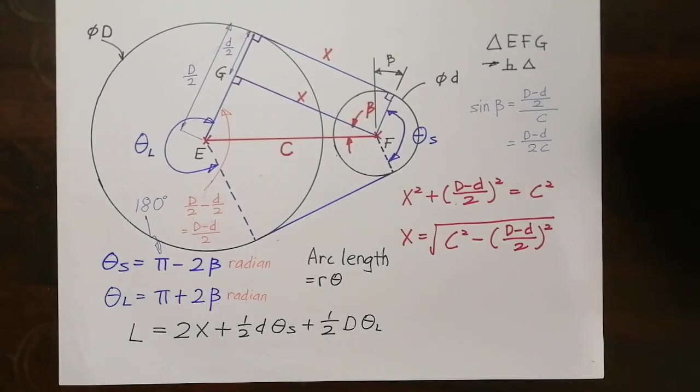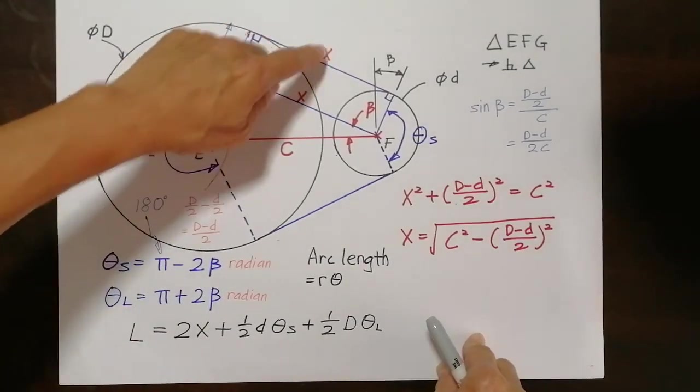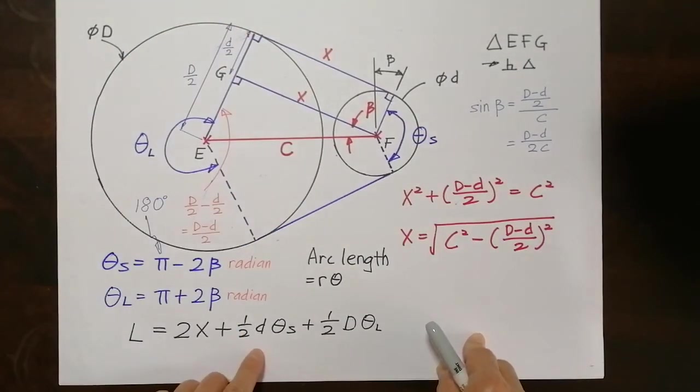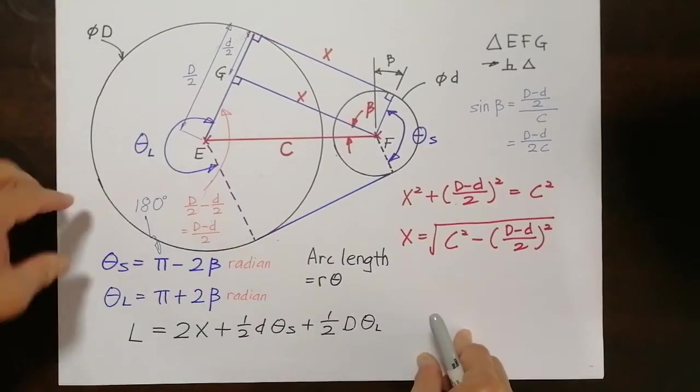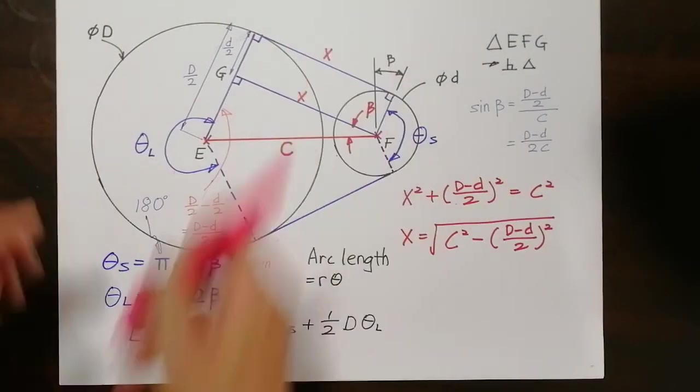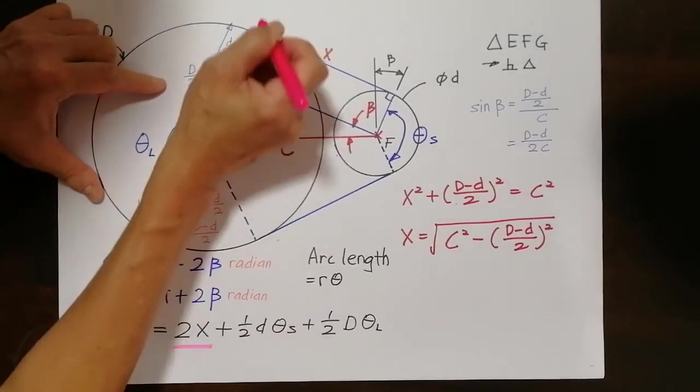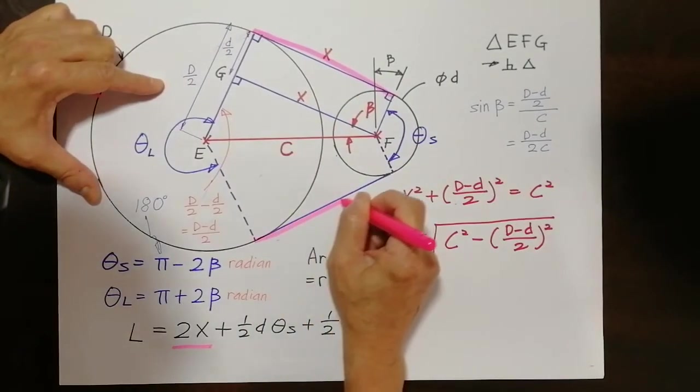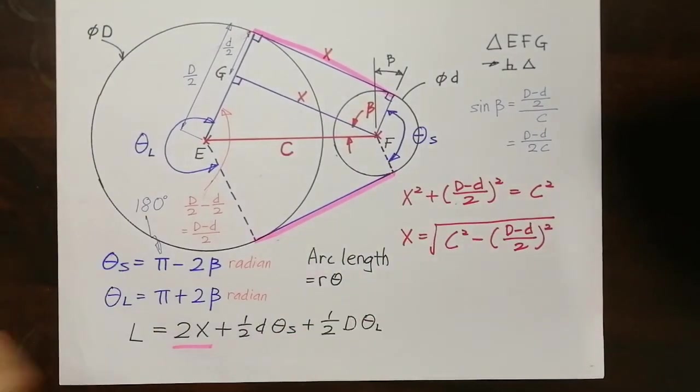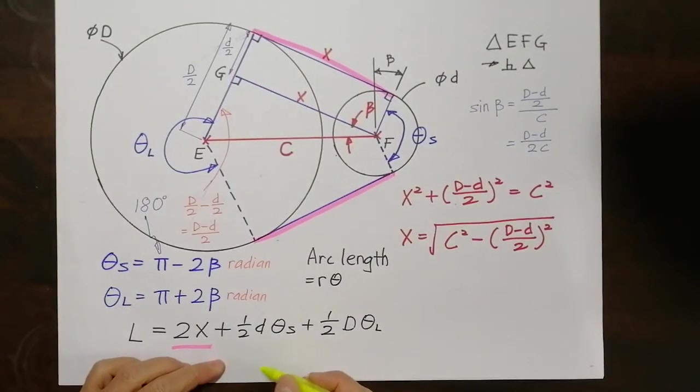That means the belt length of a pulley drive will be 2 times X here and here. And this is R theta which is over here. And that is over here. Let me just put it in color. Now the 2X actually is this line, here and here. Then the half d theta S, this is a small one, this is a small D, it's actually this distance.